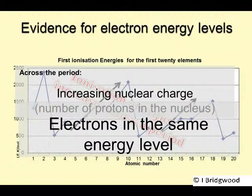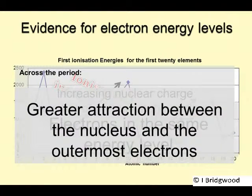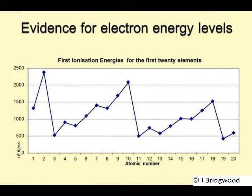Now, what does that mean, therefore, in terms of attraction of those electrons by the nucleus? It's going to increase. As we increase the number of protons going across the period, it will increase the attraction between those electrons and the nucleus. So, we can explain increasing ionization energy across the period, by considering the number of protons in the nucleus, and the number of electrons in the same energy level.